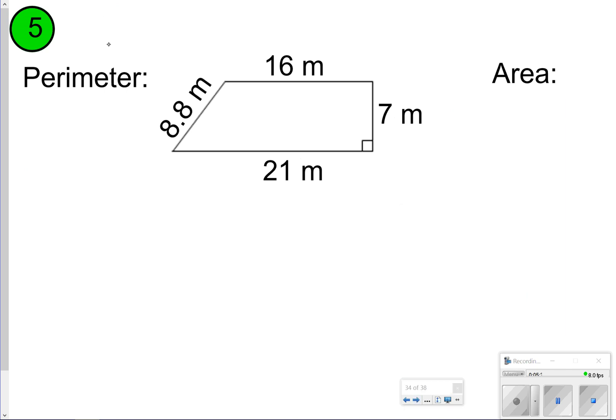Here's another one you're going to try. Pause it. Notice here the height is the outer edge as well, so you actually will use the height in this one to find your perimeter too. Go ahead and try. Click play when you're done. So for my perimeter I'm adding all the sides, the outer edges, which is 8.8, 16, 7, and 21. And I get 52.8 meters.